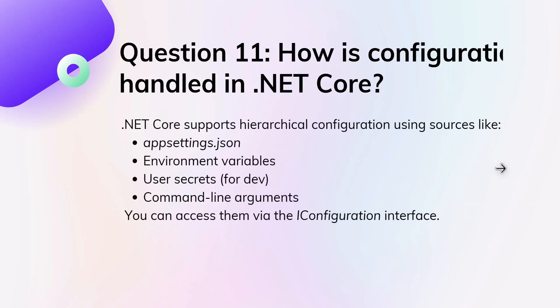Eleventh question: how is configuration handled in .NET Core? .NET Core supports hierarchical configuration using sources like appsettings.json, environment variables, user secrets for development purposes, and command-line arguments. You can access them via the IConfiguration interface.